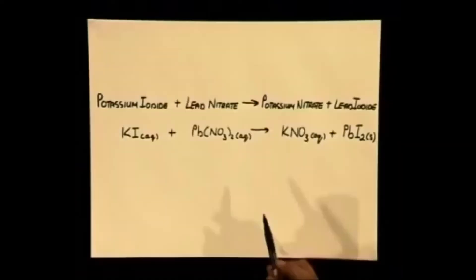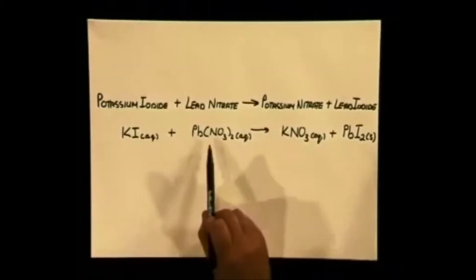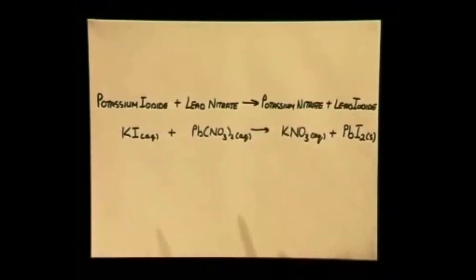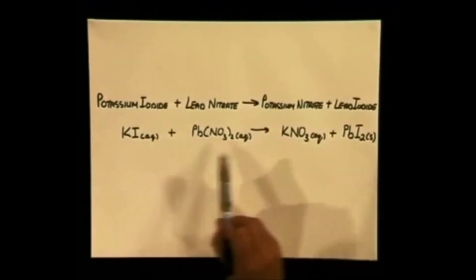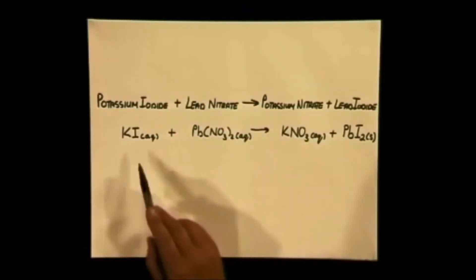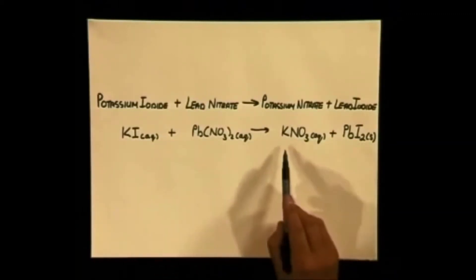Let's now write a balanced chemical equation to describe the chemical reaction. Here are the chemical formulas for the equation written underneath the words. Do you notice that the equation is not balanced? Count the number of ions before the reaction and the number of ions after, and you will notice that we need two iodides at the start and we need two nitrates at the end.